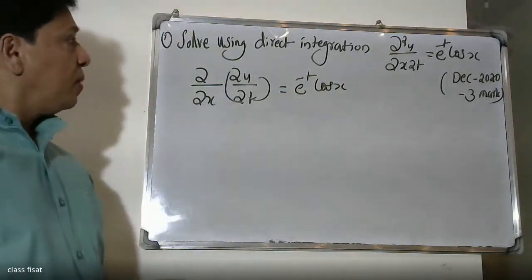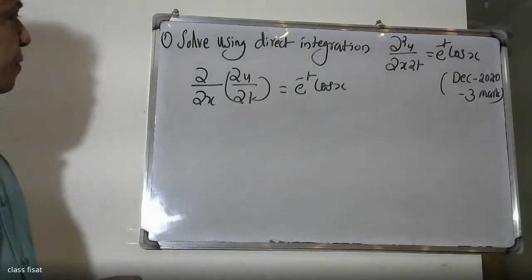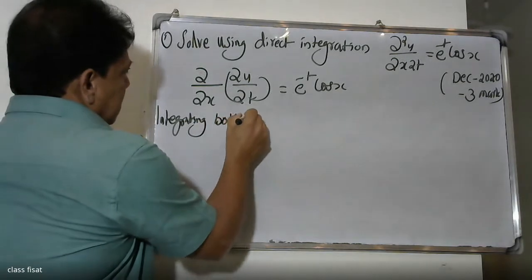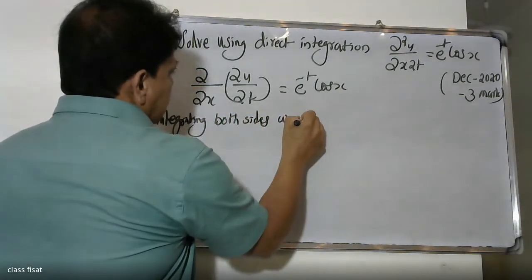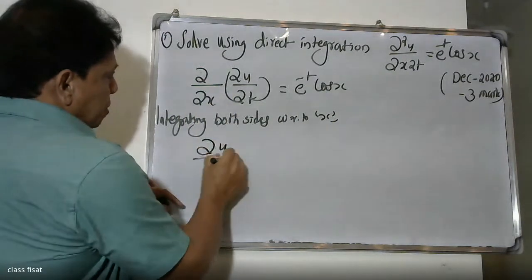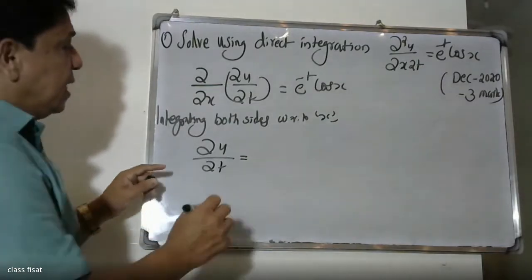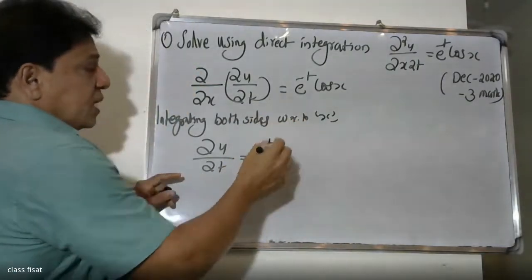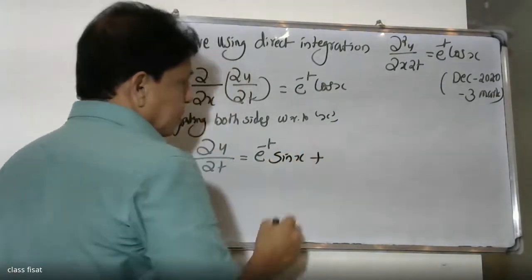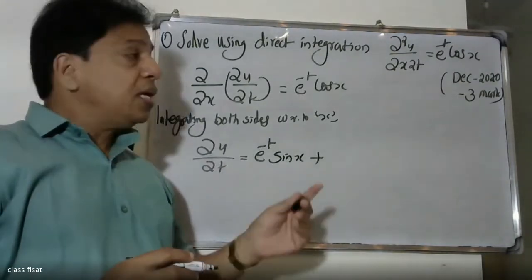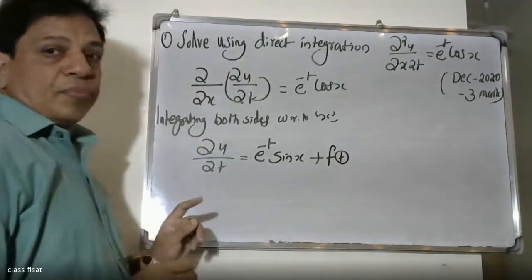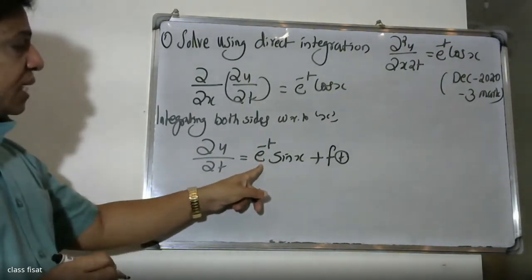Integrating both sides with respect to x, we get ∂u/∂t = e^(-t)sin(x) + f(t). The cos(x) integrates to sin(x), and e^(-t) is constant with respect to x, plus an arbitrary function f(t).